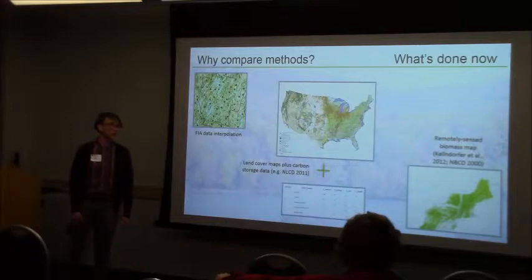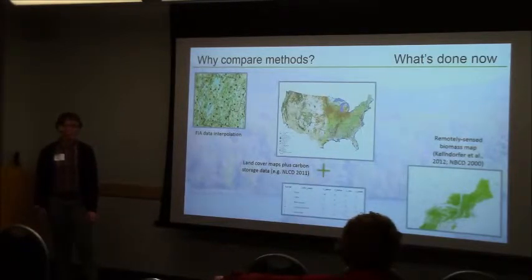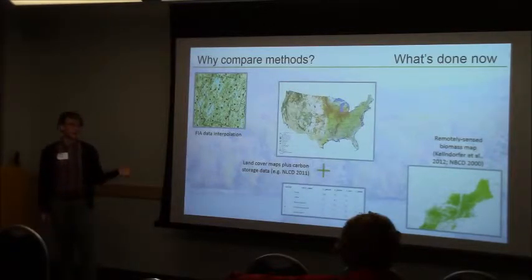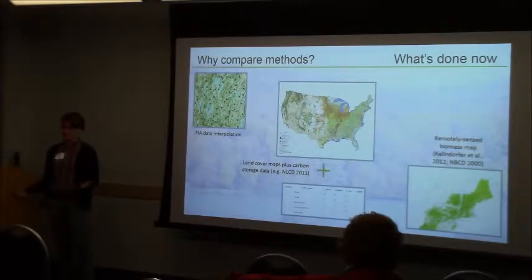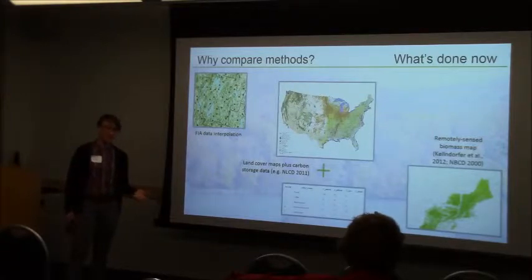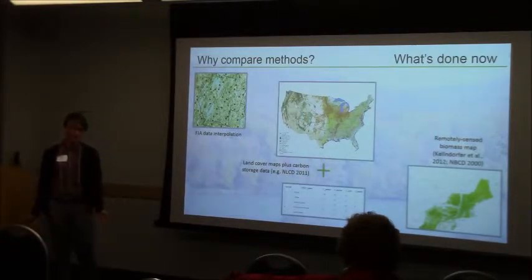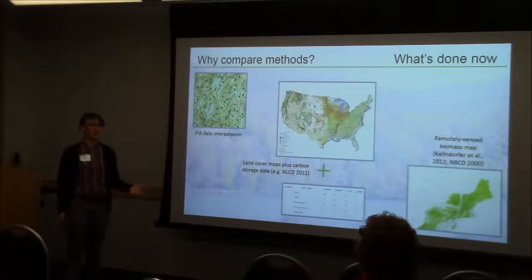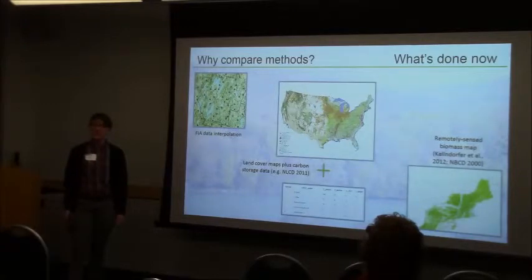The last thing you could do is use a remotely sensed biomass map. One of these came out from Woods Hole a couple of years ago, and those can be great — they do show heterogeneity in the forest at this scale. The problem is that they rely on a confluence of lots of different data sources, including actively remotely sensed data which may not be available everywhere, won't be available for regular time steps, and can be really expensive.